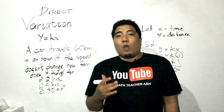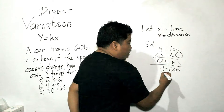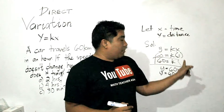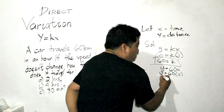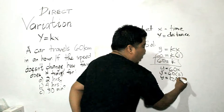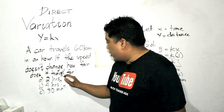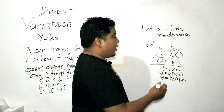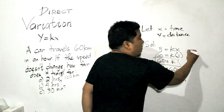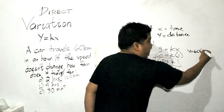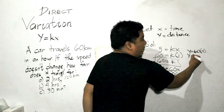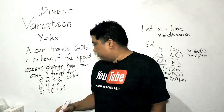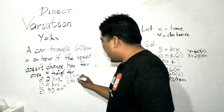Let us solve our first problem: what is the distance traveled in 2 hours? That is y is equal to 60 times 2, so y is equal to 120 kilometers. For the second problem, 4 hours: using y is equal to 60x, that is y is equal to 240 kilometers.